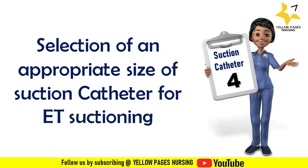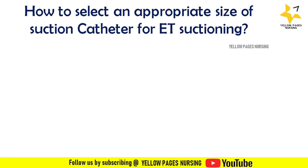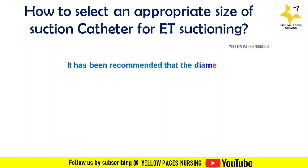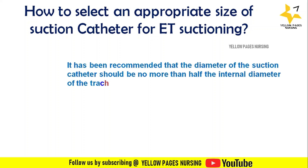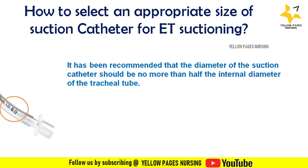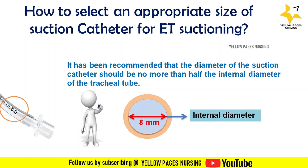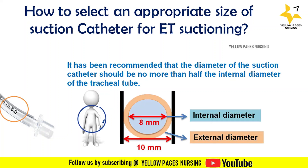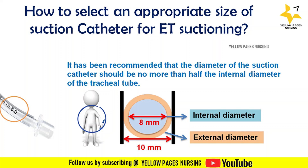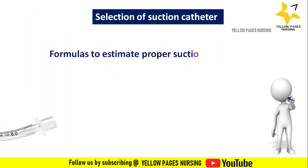Next is selection of an appropriate suction catheter size for endotracheal suctioning. It is recommended that the diameter of the suction catheter should be no more than half the internal diameter of the tracheal tube. For example, on an endotracheal tube labeled ID 8, the internal diameter is 8. The external diameter is always more than the internal diameter, and we consider only the internal diameter for suction catheter selection.